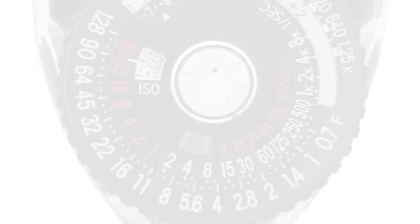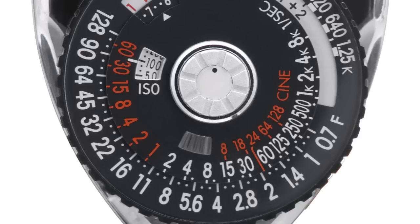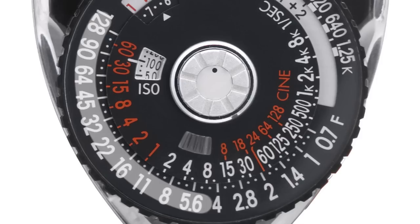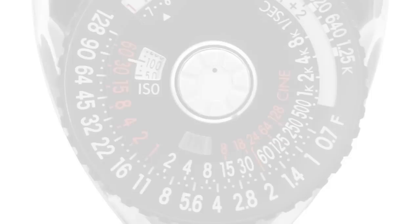If you are measuring light for motion picture, refer to the orange numbers near the center of the dial followed by the word CINE. These represent CINE camera frame rates. The aperture number on the outer dial that's directly below the frame rate number is the proper f-stop for that CINE frame rate.